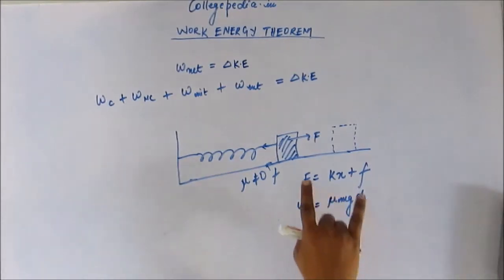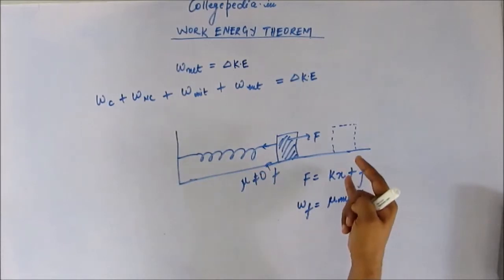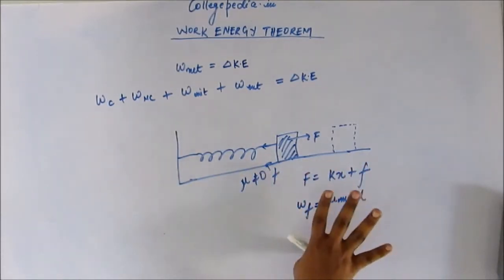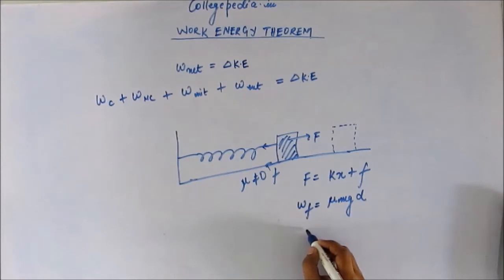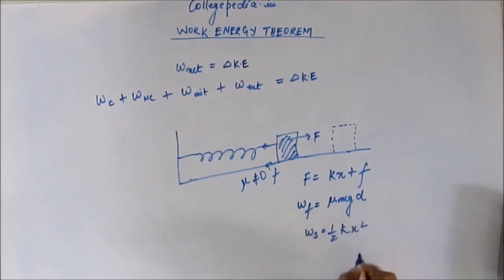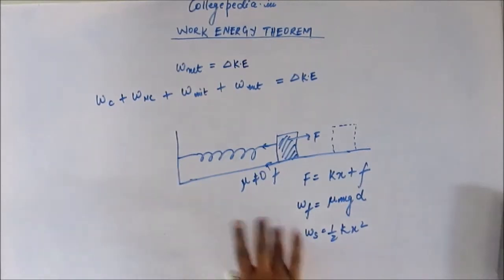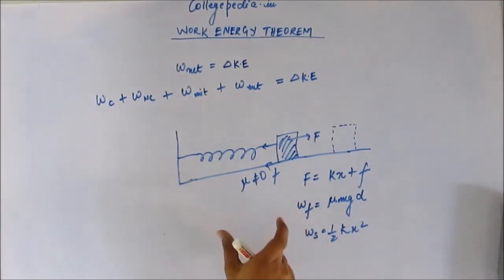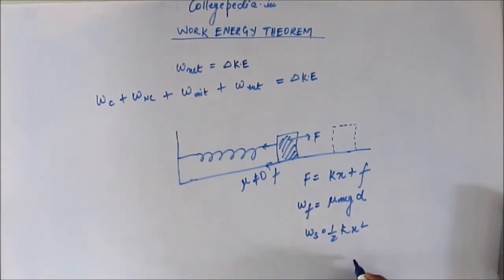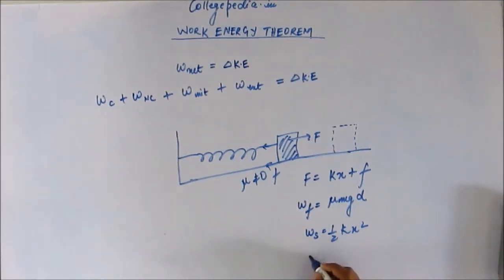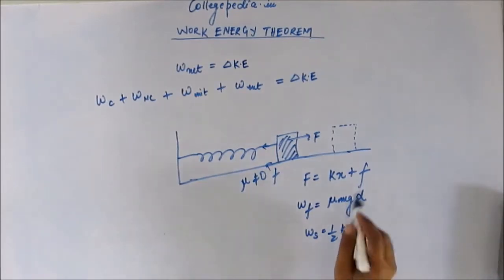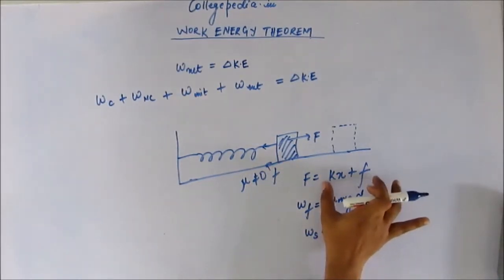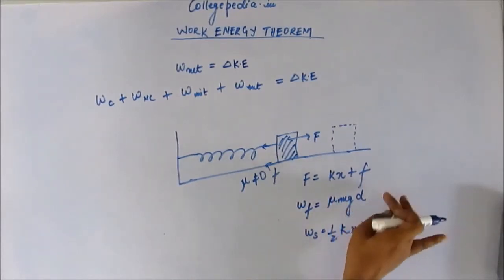Now let's calculate the work done by the spring force. Work done by the spring force is half kx squared — we have calculated this before, because the spring force is not constant; it depends on the stretch x, so we use integration. Therefore, work done by spring force equals half kx squared, and the external force equals kx plus F.